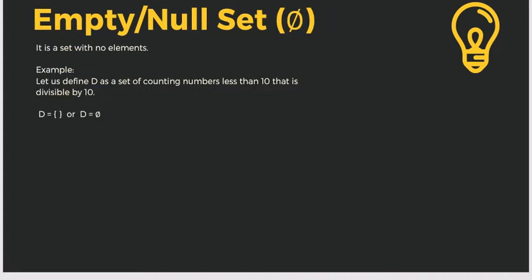Let's have the empty or null set. It is a set with no elements. For example, let us define D as a set of counting numbers less than 10 that is divisible by 10. From numbers 1 to 9, there are none divisible by 10, since divisibility by 10 starts at 10, 20, 30, and so on. So when there is nothing in the sample that meets the condition, the set is empty or null.